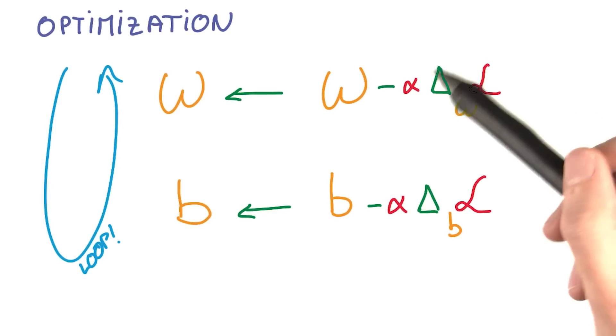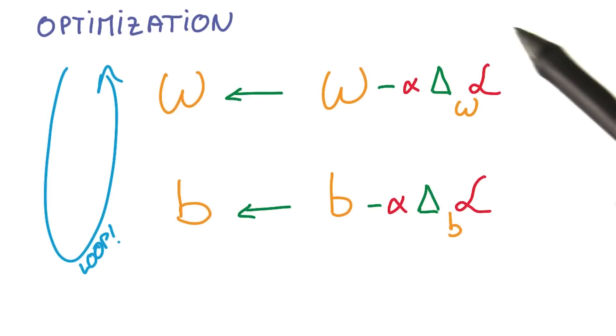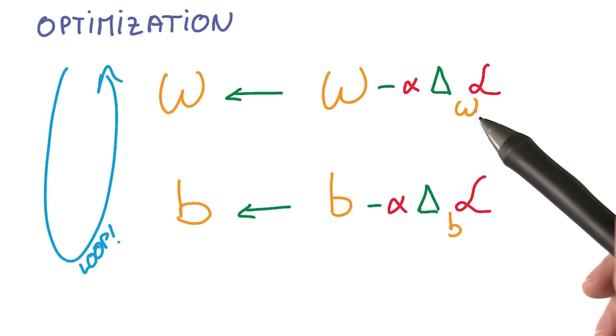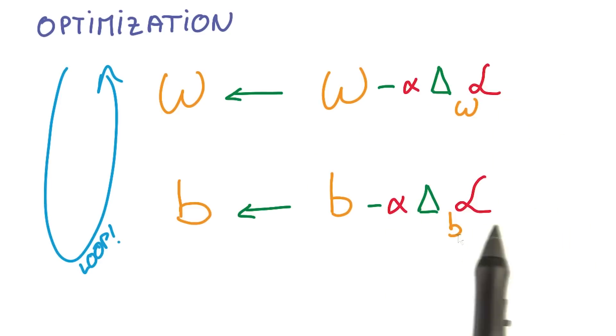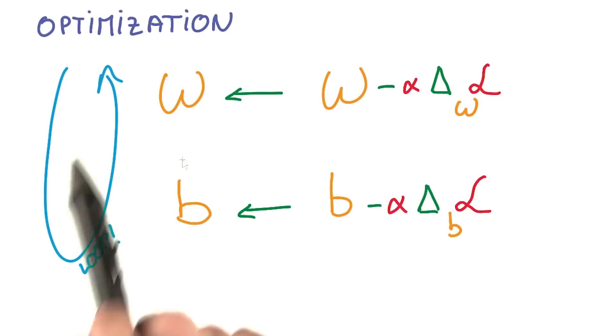Then our magical optimization package computes the derivative of this loss with respect to the weights and to the biases, and takes a step back in the direction opposite to that derivative. And then we start all over again. Repeat the process until we reach a minimum of the loss function.